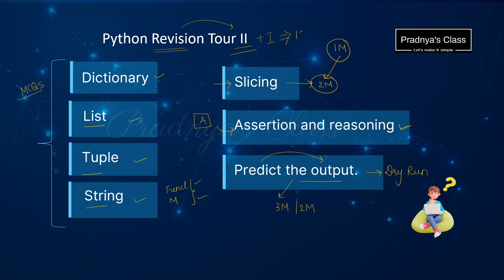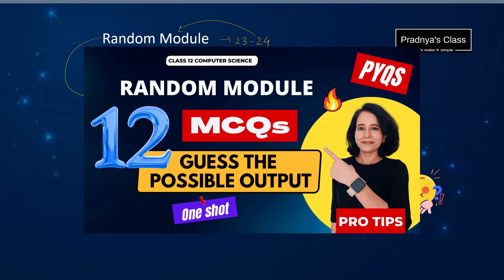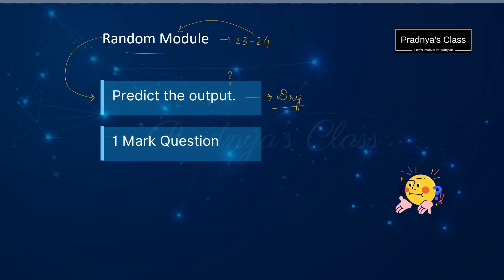If we talk about these first two chapters, the weightage is almost 15 marks. Let's move ahead to the next topic that is the random module. For the session 23-24, we need to focus and you will surely be getting one question based on it in the form of predict the output. This question also you need to solve using the dry run method. You may get this question for one mark or two marks. Even there are chances that you will be getting one question in section A in which you may need to mention the name of the modules for specific functions.